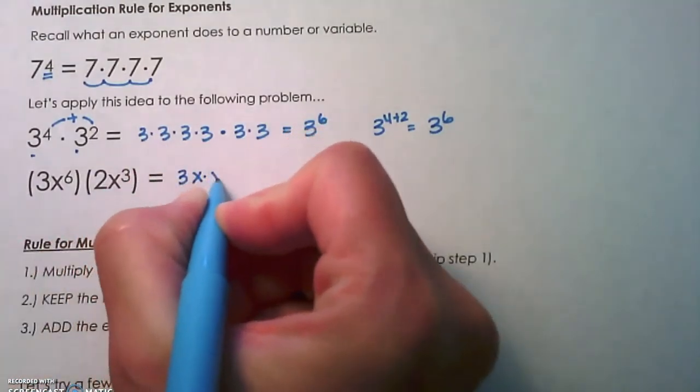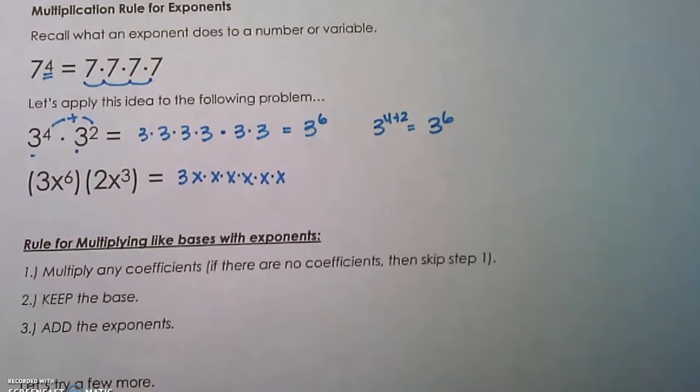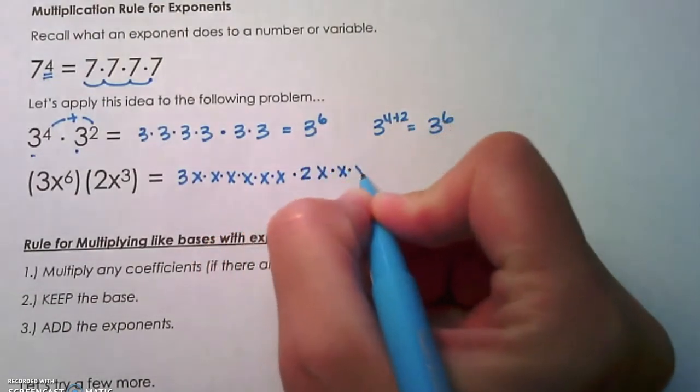So, 3 times x to the 6th is 3 times x multiplied by itself 6 times, times 2 times x multiplied by itself 3 times.